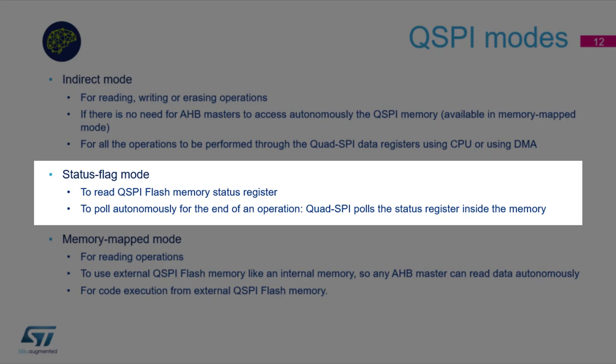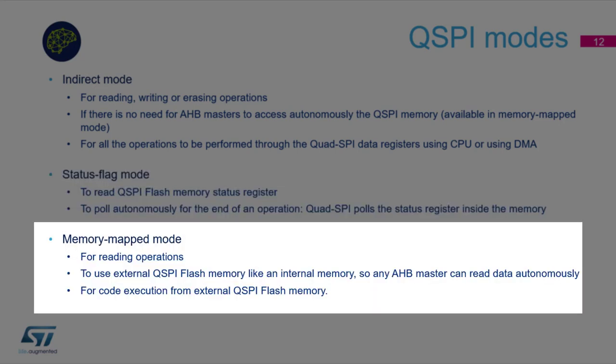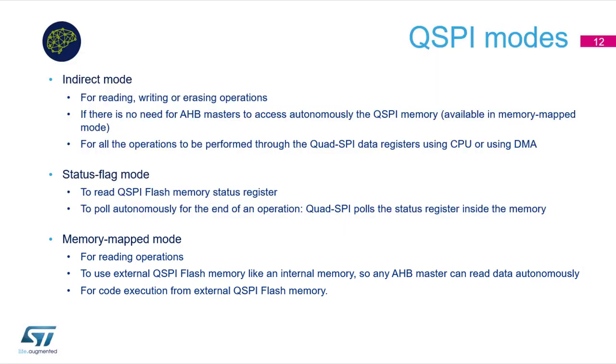For example, the status register of memory contains a write-in-progress bit. In status polling mode, the peripheral automatically waits for this bit to clear after a write operation. Memory-mapped mode is only for reading operations. In this mode, external memory appears like internal memory, so any AHB masters can read data anonymously and also execute code from external memory. That was almost all about Quad SPI theory.